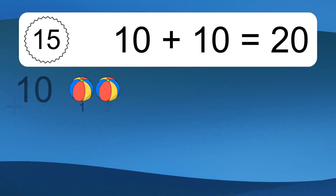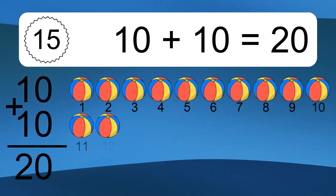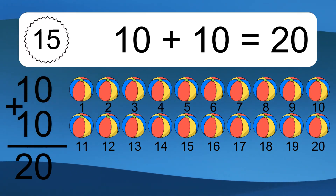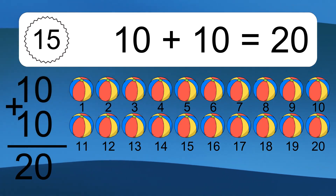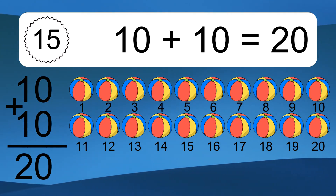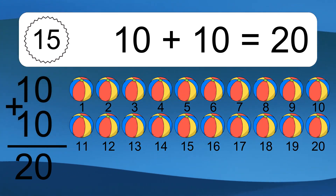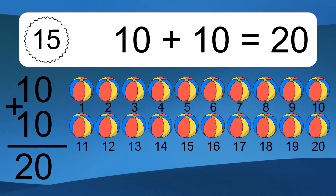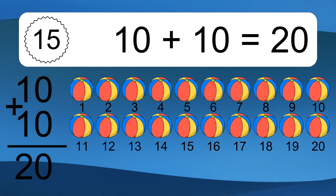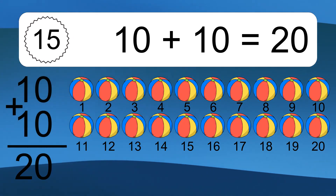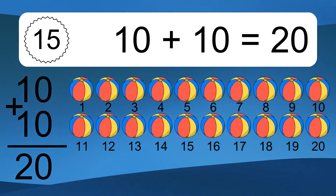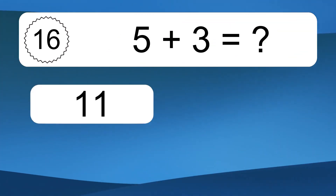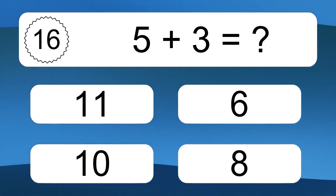10 plus 10 equals what? 10 plus 10 equals 20. Let's count it: 1, 2, 3, 4, 5, 6, 7, 8, 9, 10, 11, 12, 13, 14, 15, 16, 17, 18, 19, 20.